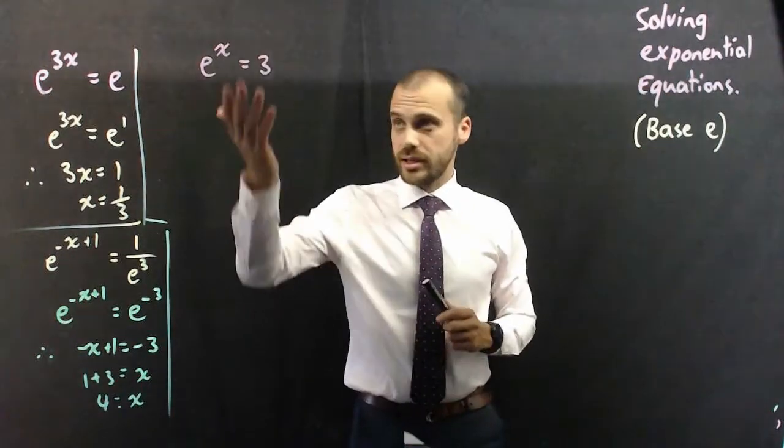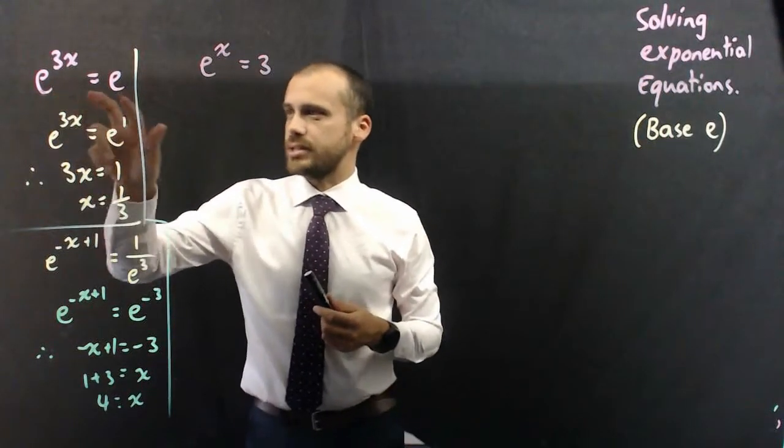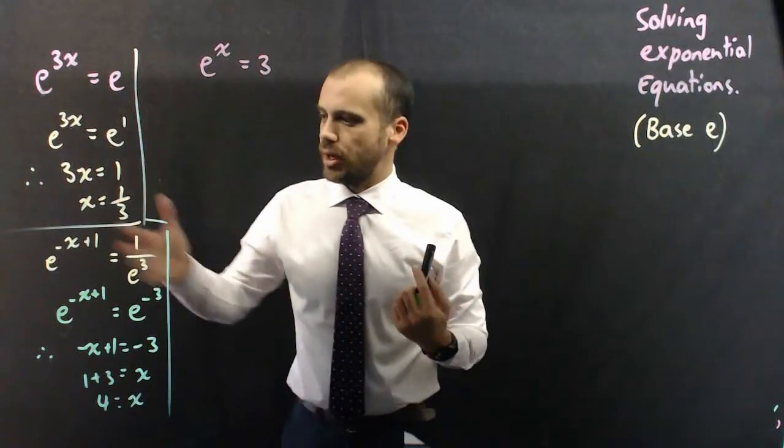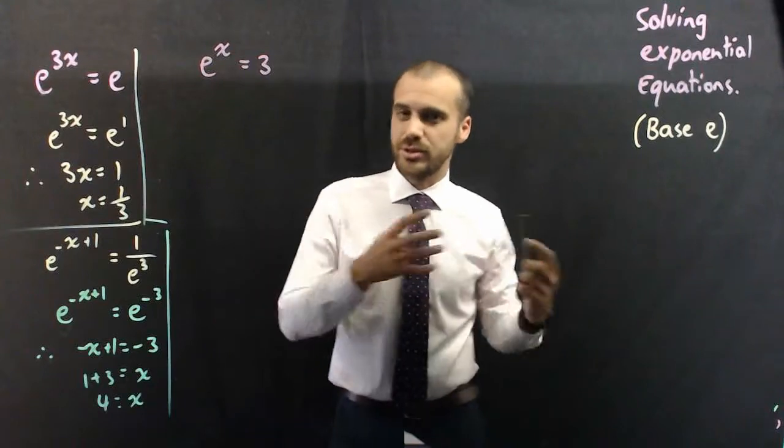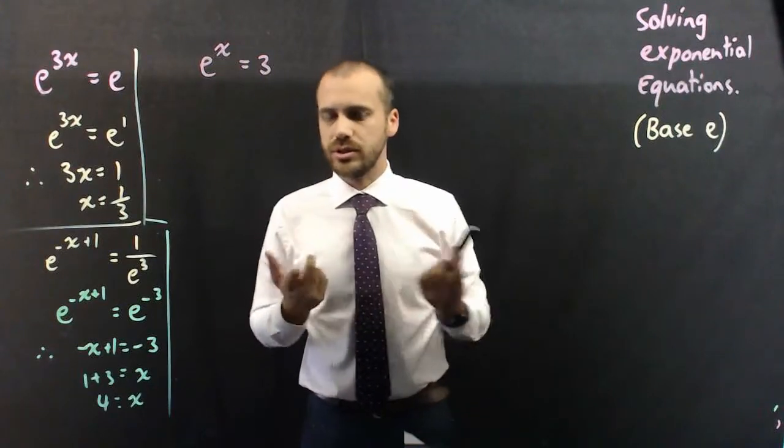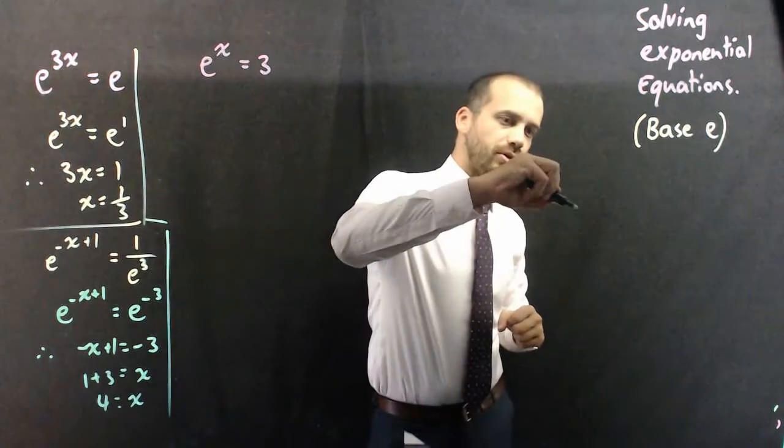So, more complicated. e to the x equals 3. Problem, we're not going to be able to come up with a base and a base equal to each other, because there's only one e there. So, what we're going to do is use logs. So, it might be a little while since you've done logs. So, a reminder of the basic idea about logs.